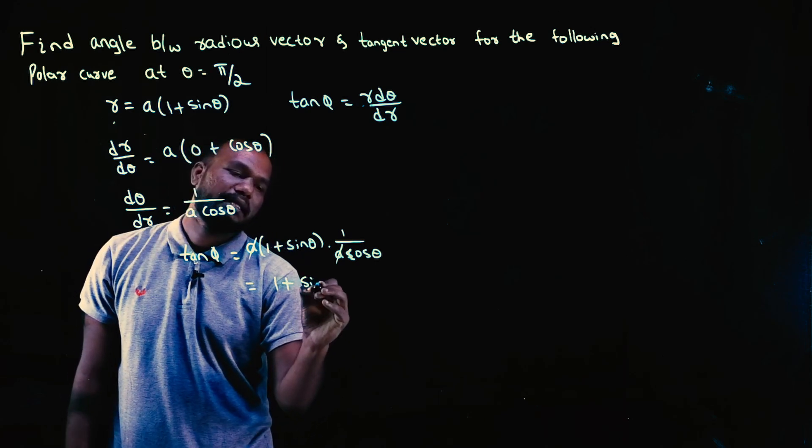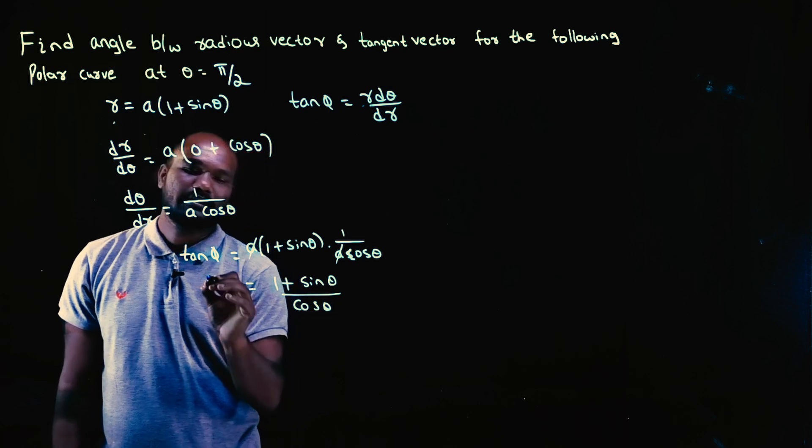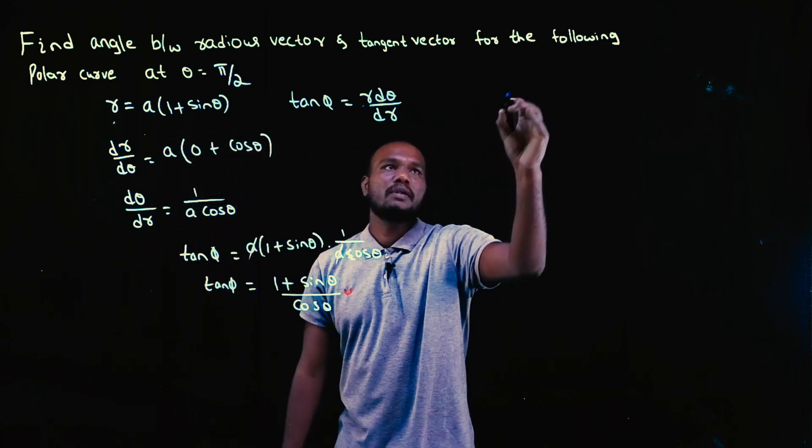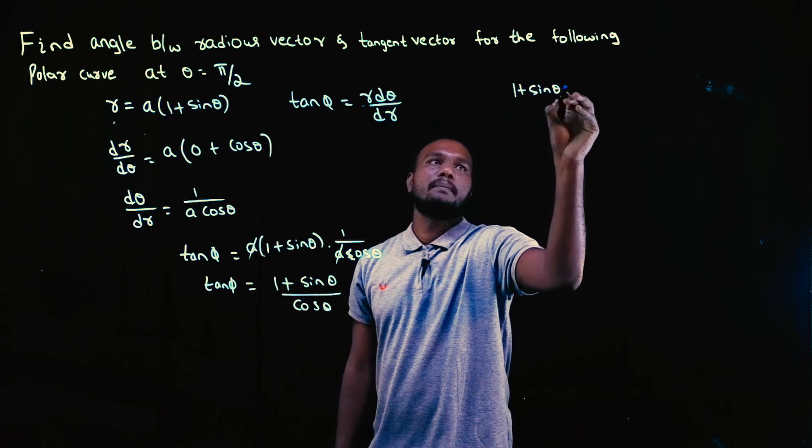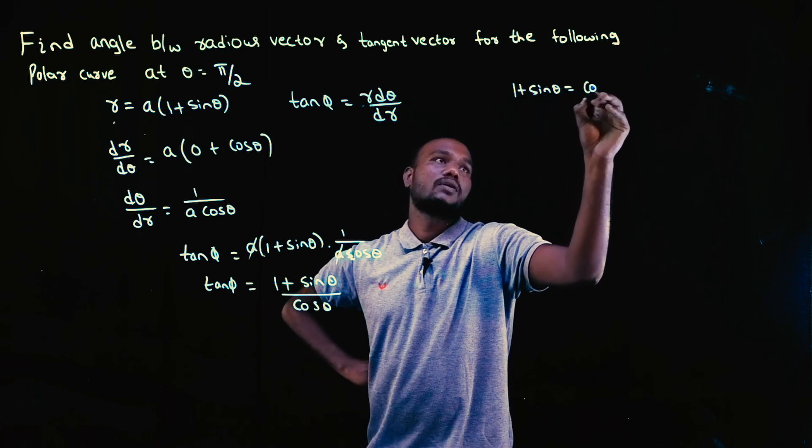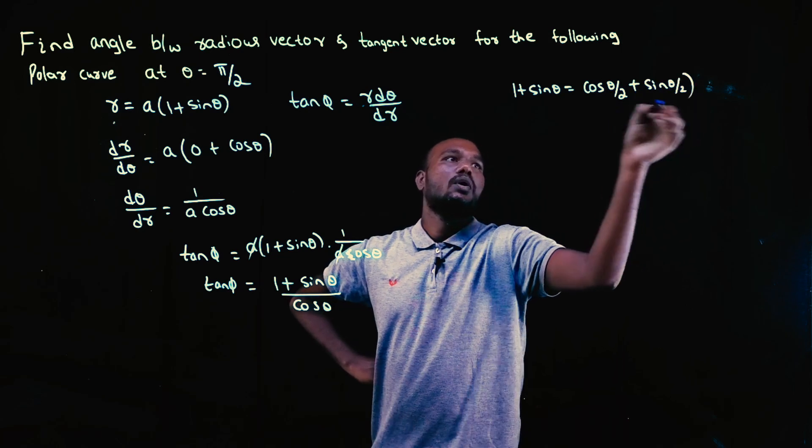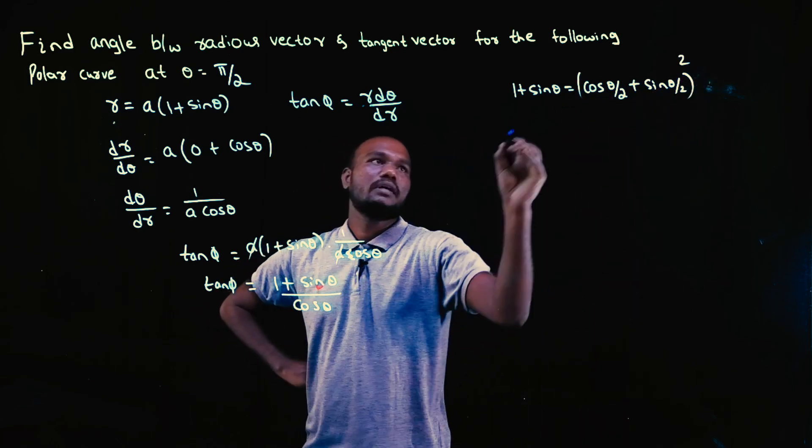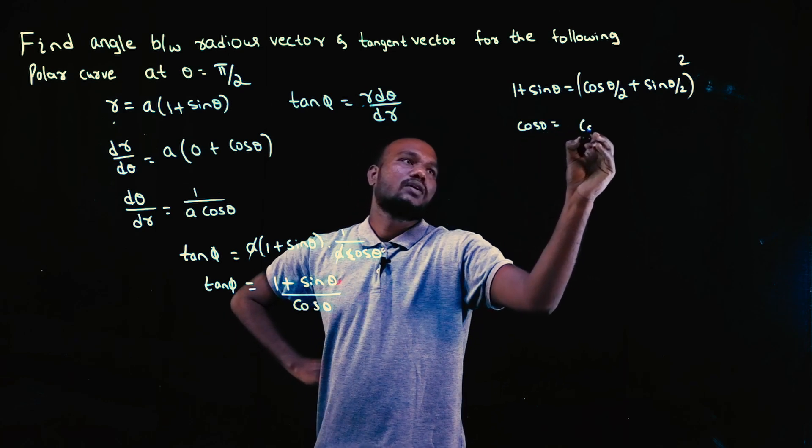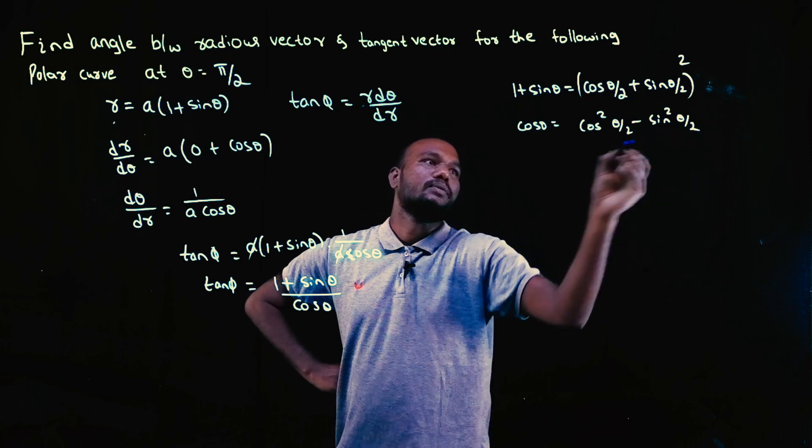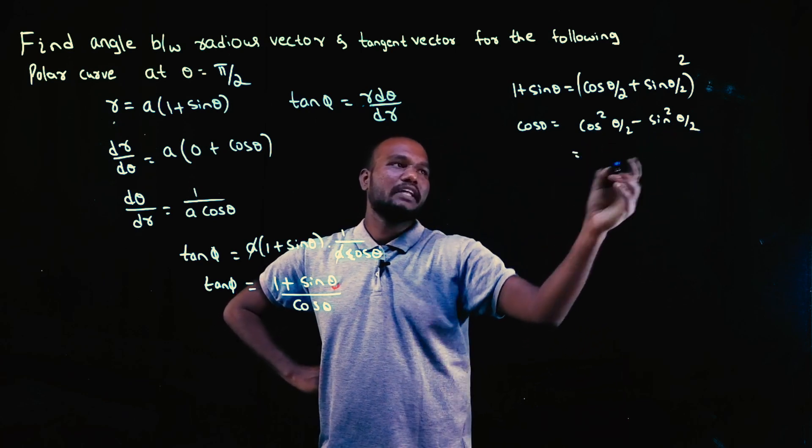I'll be left with (1 + sin θ)/cos θ. This is the value of tan φ. Now the major formulas that you need to learn: 1 + sin θ equals (cos θ/2 + sin θ/2)². And cos θ formula is cos²(θ/2) - sin²(θ/2). This is the form of a² - b².